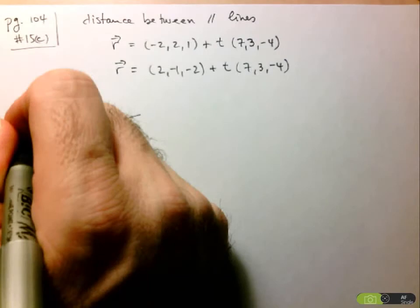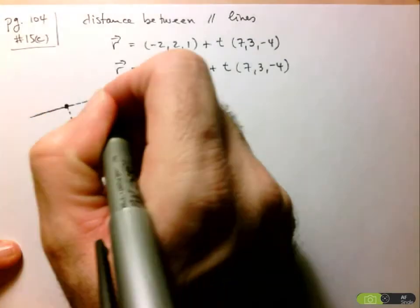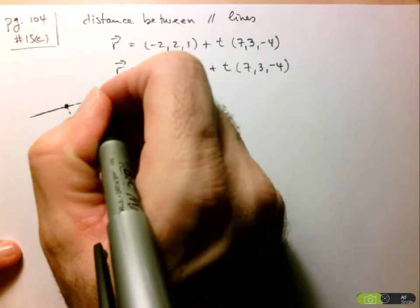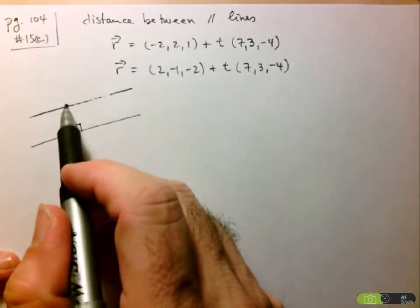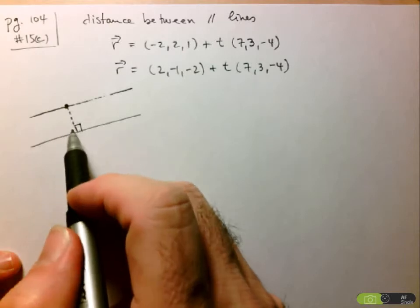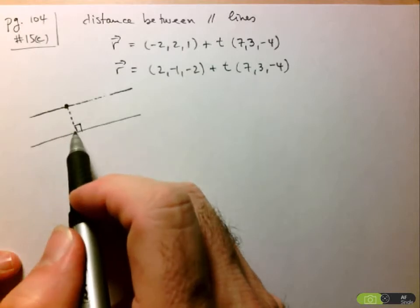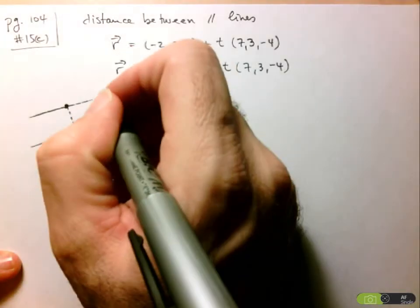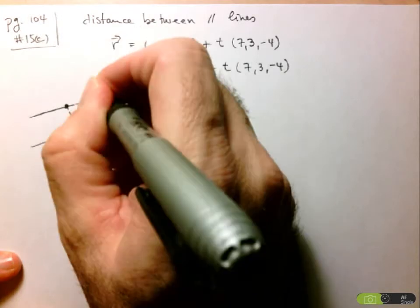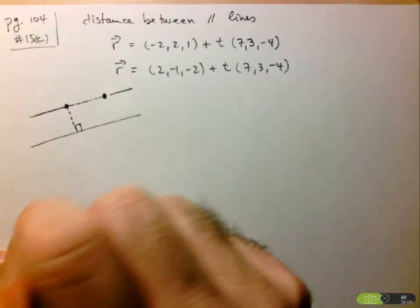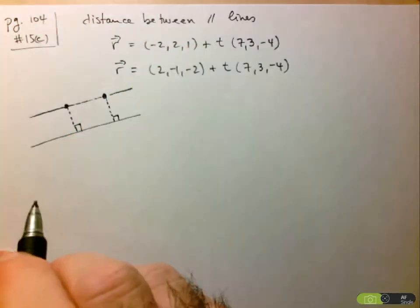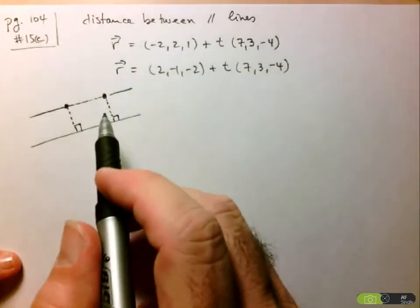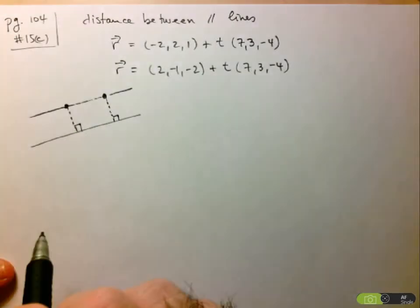Instead now what we have is we have two parallel lines. But what I want you to think about here is that if I consider any point on this line above and consider its distance to the other line, or I take any other point on this second line and consider its distance to the first line, we notice it's always the same. It's always going to give us the shortest distance between these two parallel lines.